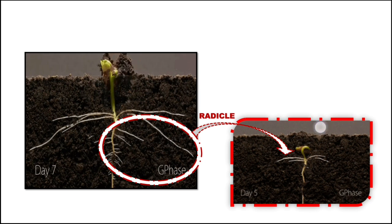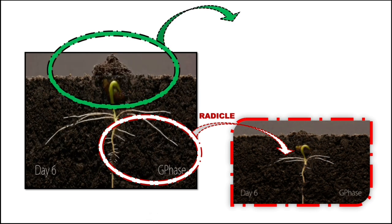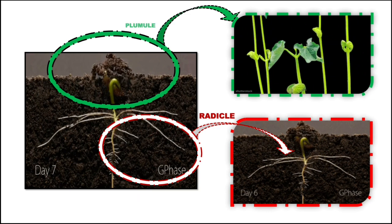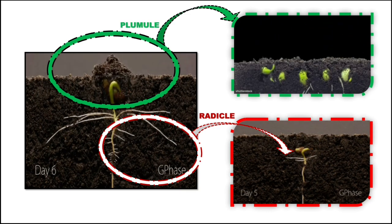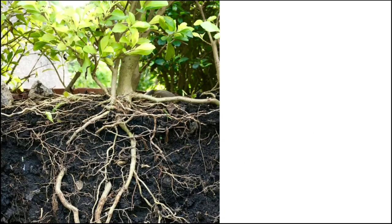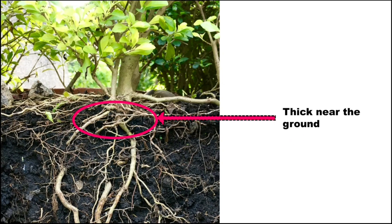The part that grows above the soil is known as the plumule. The shoot system of a plant will grow from the plumule. As we all know, the roots are formed from the radicle, growing into the ground. The root is thick near the ground and gradually tapers to a pointed end.